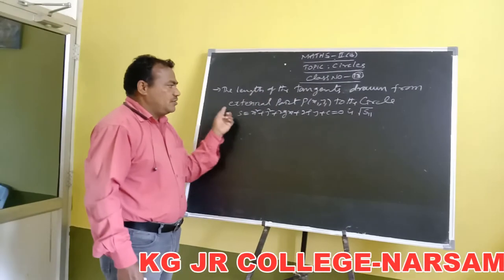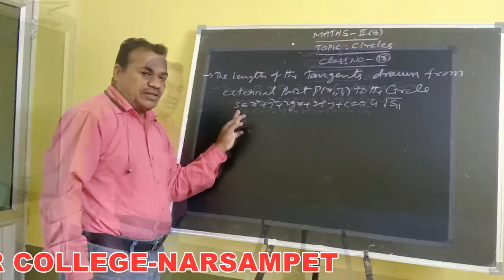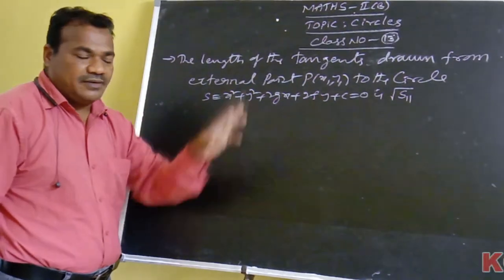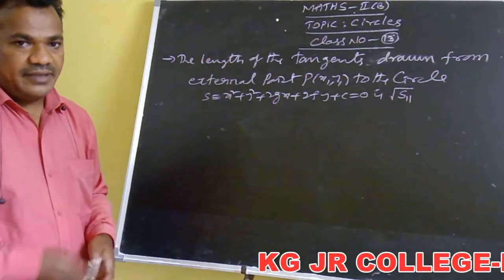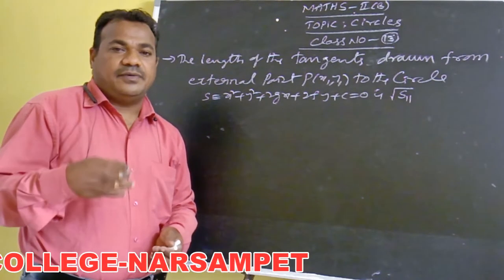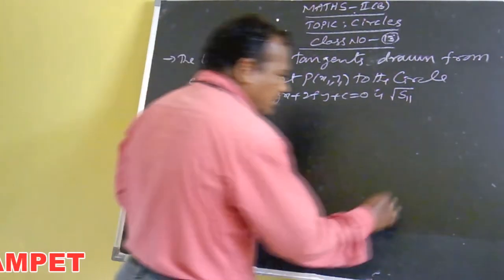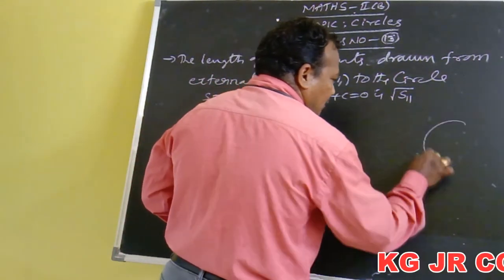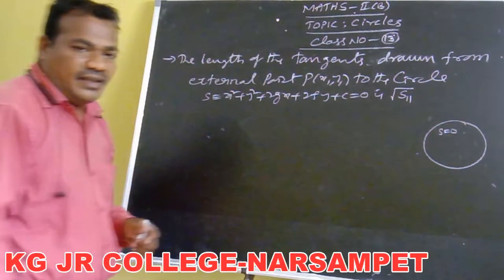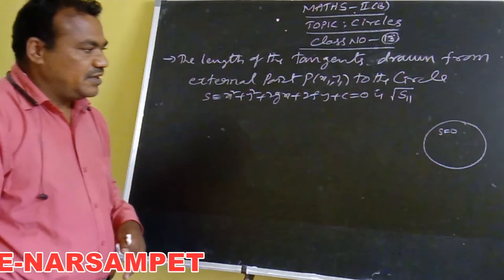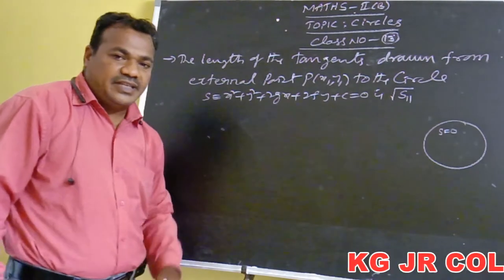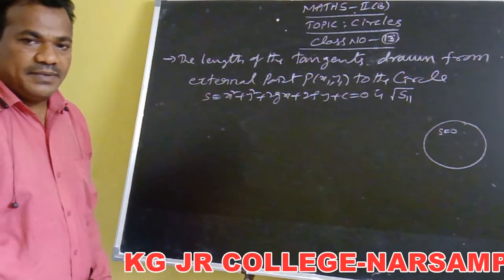The length of the tangent drawn from external point P to the circle S, where S equals x² + y² + 2gx + 2fy + c = 0, is equal to √S₁₁. This is the formula for finding the length of the tangent drawn from an external point to the circle. Here S is the general equation of the circle, denoted as S.